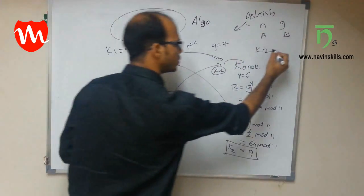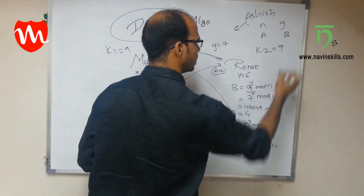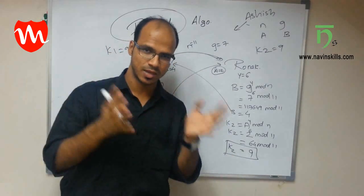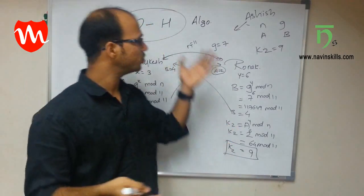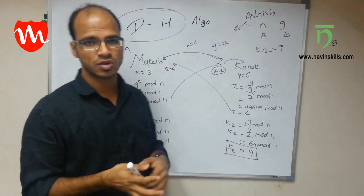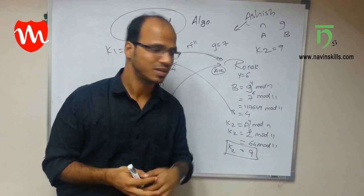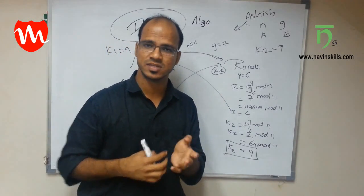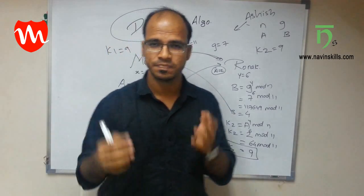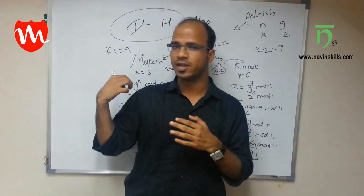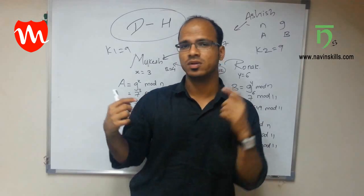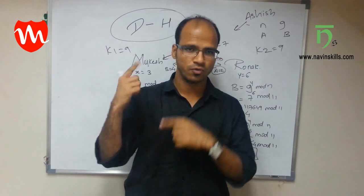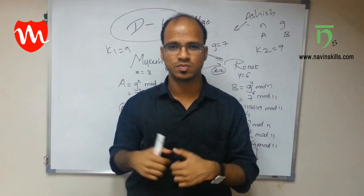K1 = 9 and K2 = 9 — we have achieved a shared key that is the same for both parties. This is how the Diffie-Hellman algorithm works. It's straightforward: you follow approximately seven steps. Do subscribe for more videos, thank you.